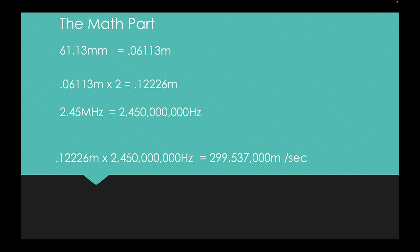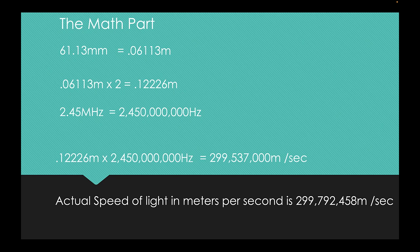But the actual speed of light is 299,792,458 meters per second. So we are really, really, really close to the actual speed of light using just a ruler, a microwave and a bar of chocolate. That's how you measure the speed of light with a microwave and a bar of chocolate.